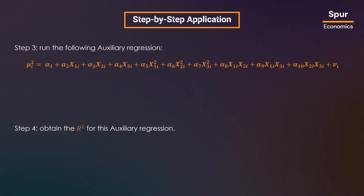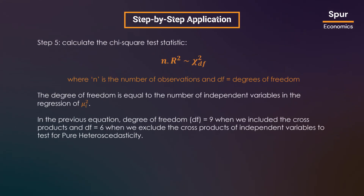In step four, we estimate the R-squared for this auxiliary regression. In the final step, we estimate the test statistic as n multiplied by R-squared, where n is the number of observations and R-squared is the one obtained from the auxiliary regression.